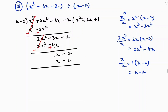Subtracting again, this minus becomes plus. So x minus x cancels, and minus 2 plus 2 cancels, giving a remainder of 0. So the answer for this division is x square plus 2x plus 1.